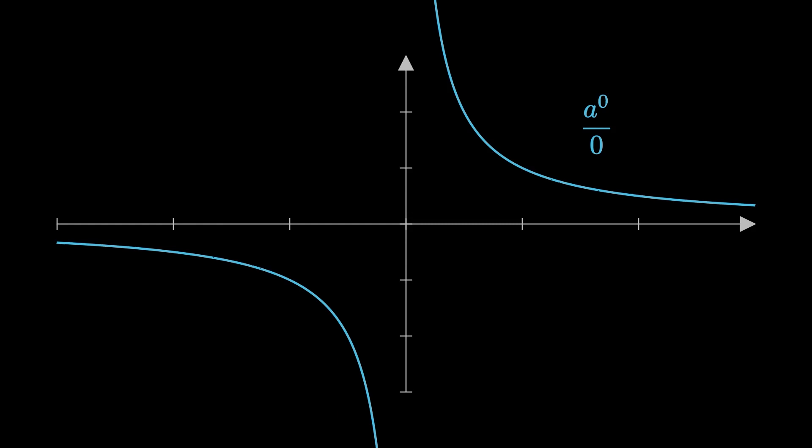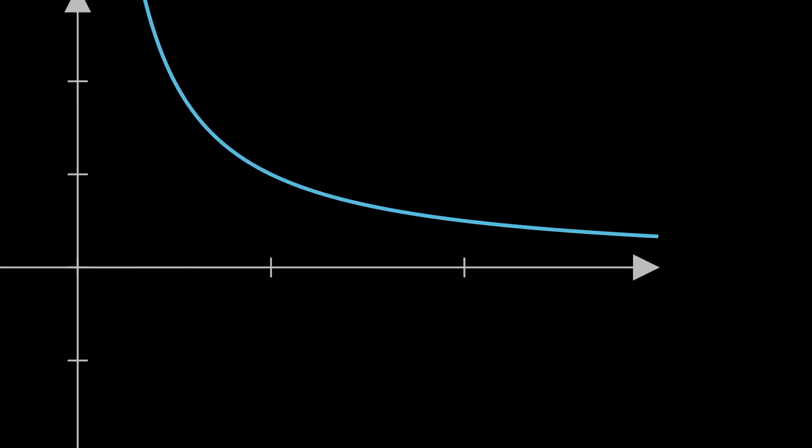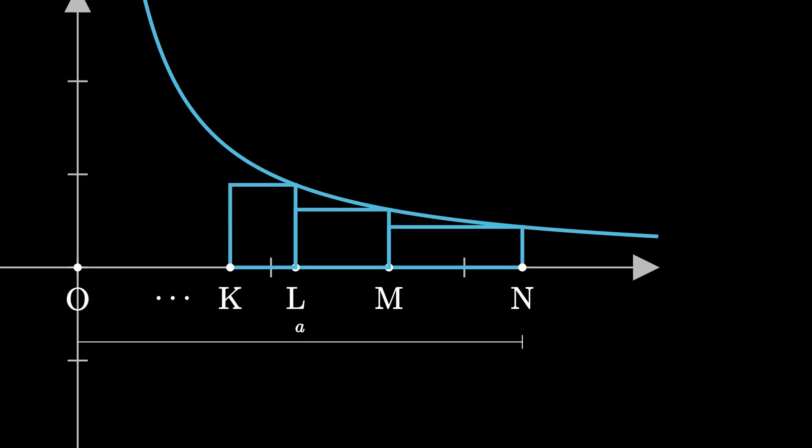This is confusing, if not downright frustrating. What's so special about this one graph? Well, let's see what happens if we do our rectangle geometric progression method on the hyperbola. Just like we did before, we label subintervals that form a geometric progression. And this time,